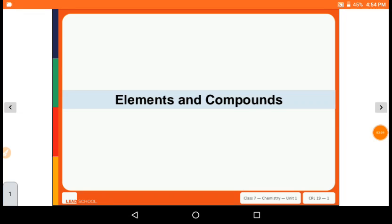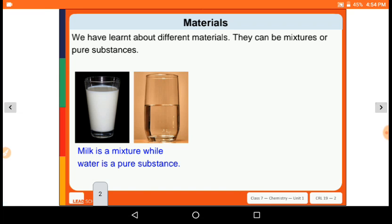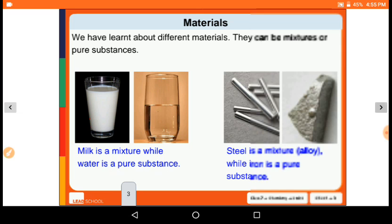Now the next topic is elements and compounds. First, materials we have learned about the different materials. They can be mixtures or pure substances. Here you can see milk is a mixture while water is a pure substance. Milk is a mixture of milk fat and water. Water is a pure substance, it is only one substance.